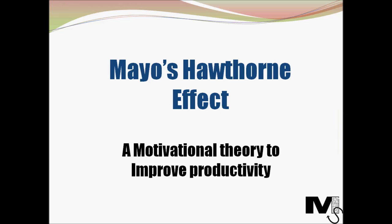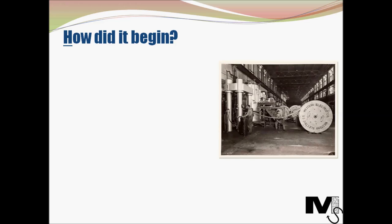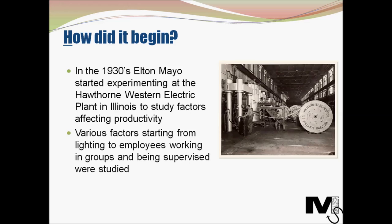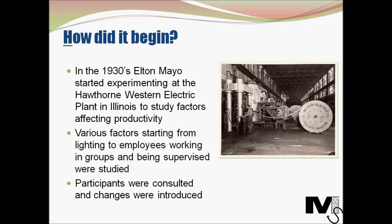So let's have a look at Mayo's Hawthorne effect motivational theory. How did it all begin? In the 1930s, psychologist Elton Mayo started experimenting at the Hawthorne Western Electric plant in Illinois to study factors affecting employee productivity. As opposed to Taylor, Mayo believed that money alone is not the biggest driving force for employee productivity, and he therefore wanted to study other factors.